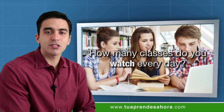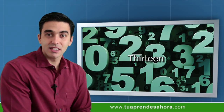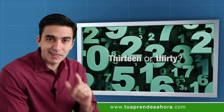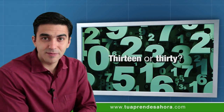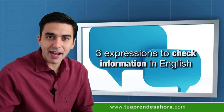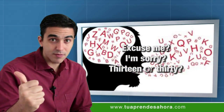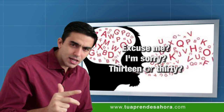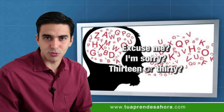'How many classes do you watch every day?' Tú me dices 'thirteen.' Yo no escucho bien, yo pregunto, 'Thirteen or thirty?' Remember: three expressions to check information in English — 'Excuse me,' 'I'm sorry,' and 'Thirteen or thirty?' — y así tú haces con todos los otros números.